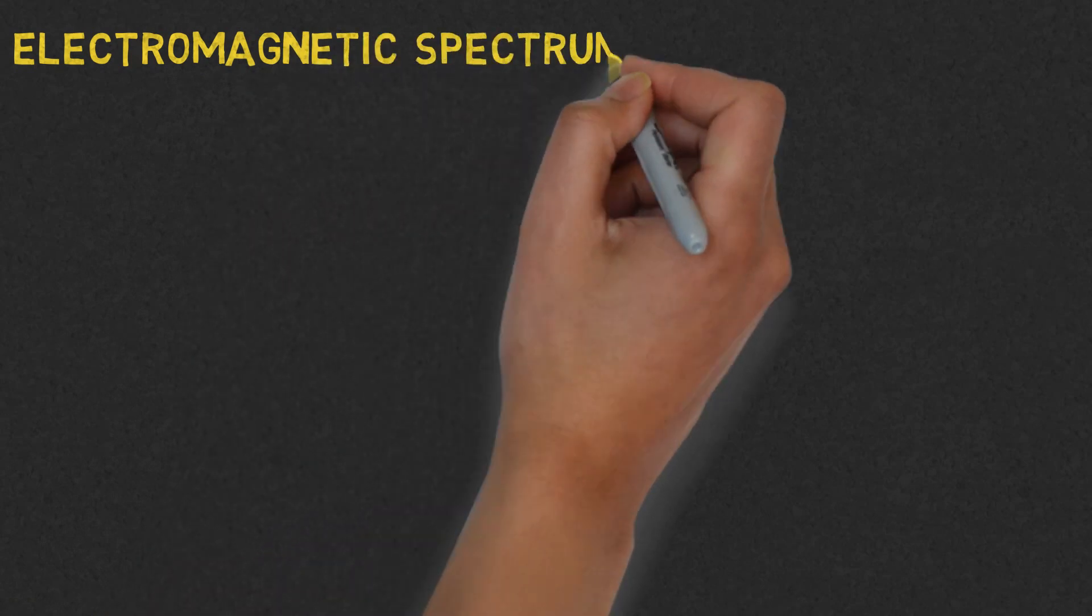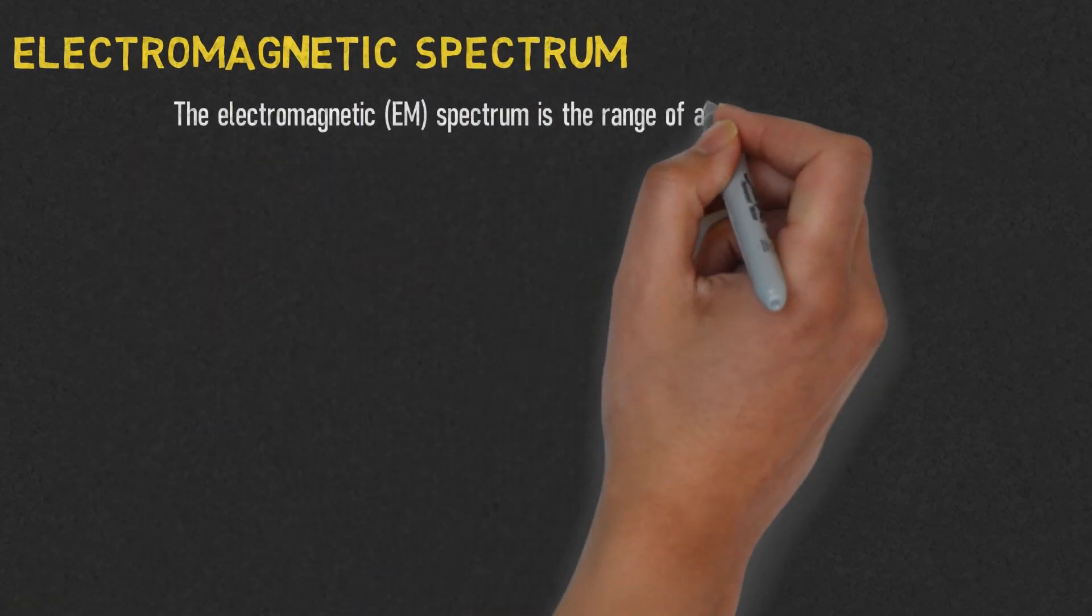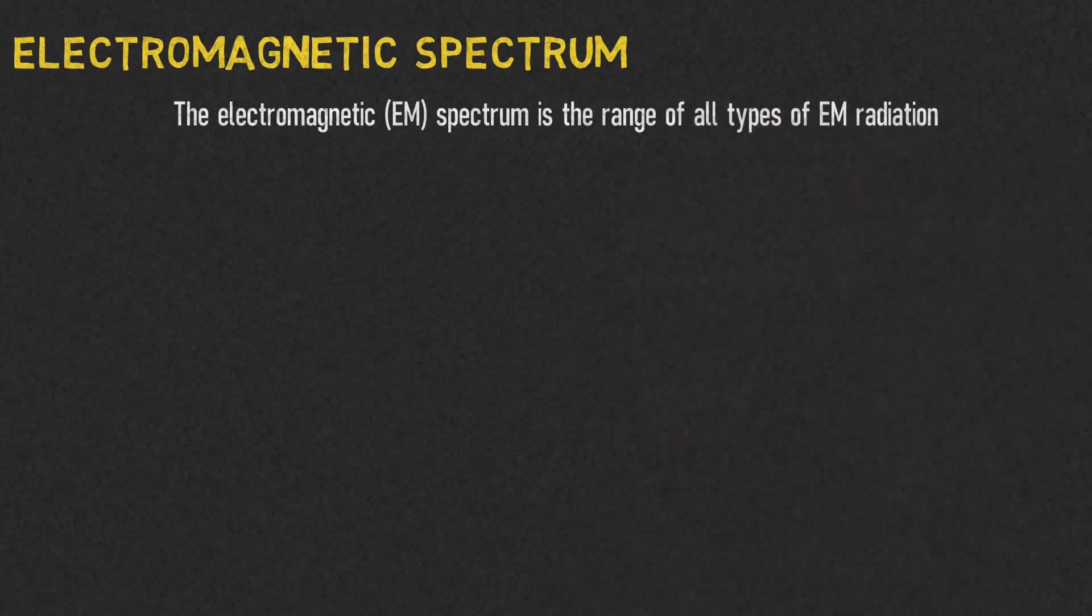What is an electromagnetic spectrum? The electromagnetic spectrum is the range of all types of electromagnetic radiations.